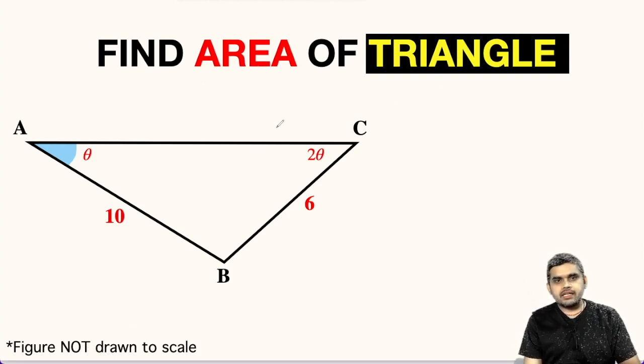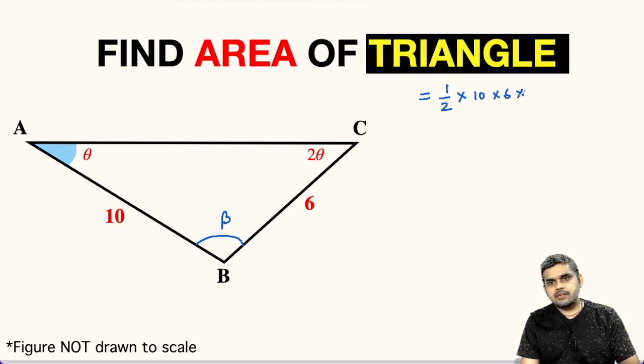We are asked to find the area of this triangle ABC. If we want to find area of any triangle, if two adjacent sides are given and we know the included angle between them, say for example beta, then area of the triangle will be equal to half times the measure of adjacent sides, that is 10 times 6 times the sine of the angle between them, sine beta.